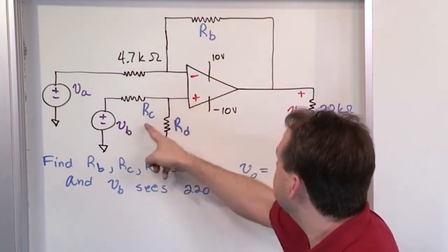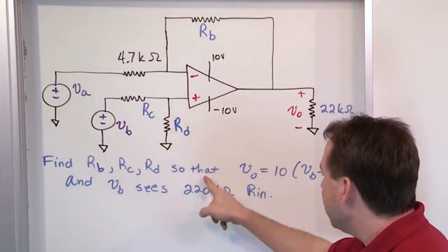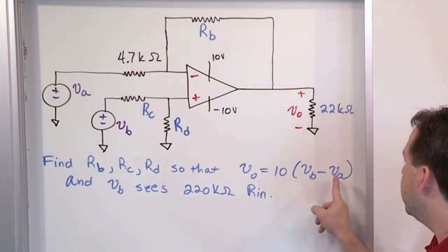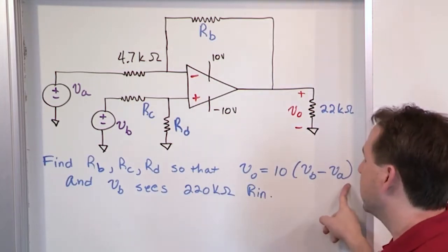Here's B, here's C, and D. So the value of all the resistors, but here's the catch. So that the output voltage is equal to this relation, 10 times VB minus VA. This is the output voltage, and it's equal to this very specific output constraint.